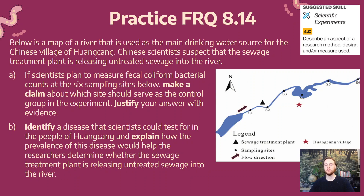For the FRQ for topic 8.14, we have a scientific investigation to look at. We need to make a claim about which site should serve as the control group for scientists measuring fecal coliform bacteria counts at six sampling sites along a river near a sewage treatment plant in Huangsang. Pay attention to the flow direction of the river (indicated by an arrow), the six sampling sites S1 through S6, and the triangle representing the sewage treatment plant. Make sure to justify your answer with evidence for why you picked a particular site as the control group.